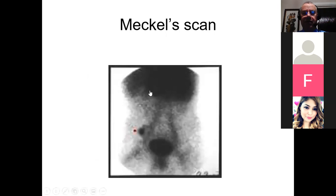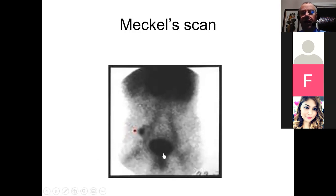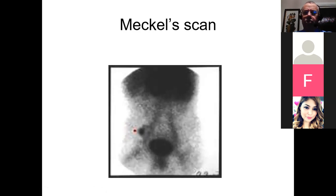Here is a classical positive Meckel's scan. You have activity in the gastric mucosa, some blood pool, urinary activity because pertechnetate is filtered, and then — marked by the red dot — an area away from the line of the ureters and away from the stomach. This would be classically the site of ectopic gastric mucosa. The most common site is the right iliac fossa, where it can symptomatically be confused with appendicitis.